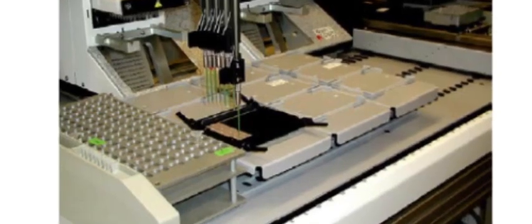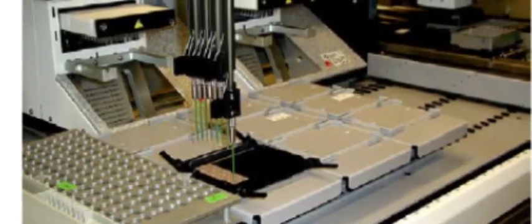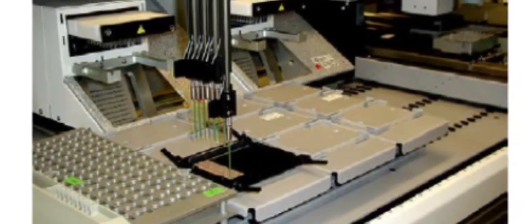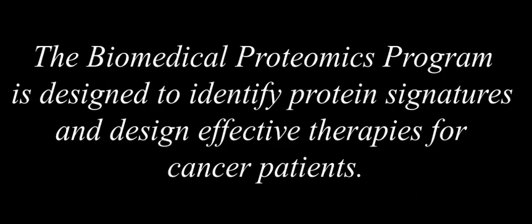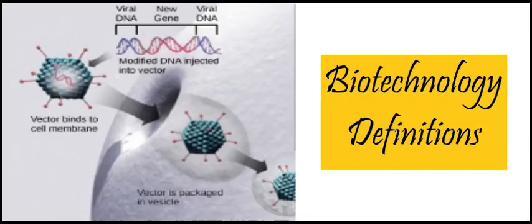This machine is preparing to do a proteomic pattern analysis to identify specific cancers so that an accurate cancer prognosis can be made. The National Cancer Institute has developed programs to improve the detection and treatment of cancer. The Clinical Proteomic Technologies for Cancer and the Early Detection Research Network are efforts to identify protein signatures specific to different types of cancers. The Biomedical Proteomics Program is designed to identify protein signatures and design effective therapies for cancer patients. This ends Chapter 10, Section 10.3. In our next video, we'll review key terms and summarize Chapter 10.